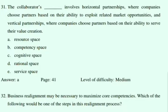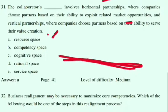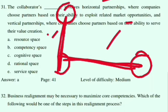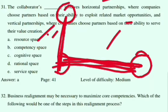The collaborators dash involves horizontal partnerships where companies choose partners based on their ability to exploit related market opportunities, and vertical partnerships where companies choose partners based on their ability to serve their value creation. A horizontal partnership is called 'resource space' — when companies choose partners that can help create value.